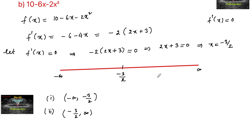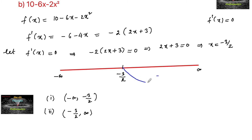We confirm in which interval f dash of x is positive or negative. f dash of x positive means increasing, and f dash of x negative means decreasing. By using the wavy curve method, since the function is negative 2 of 2x plus 3, the curve starts from the negative side because of the leading negative sign. Above minus 3 by 2, it is surely negative.